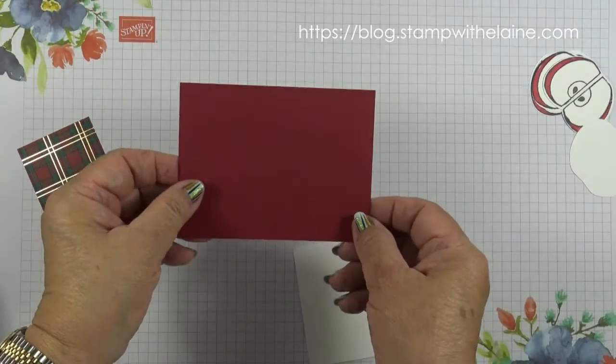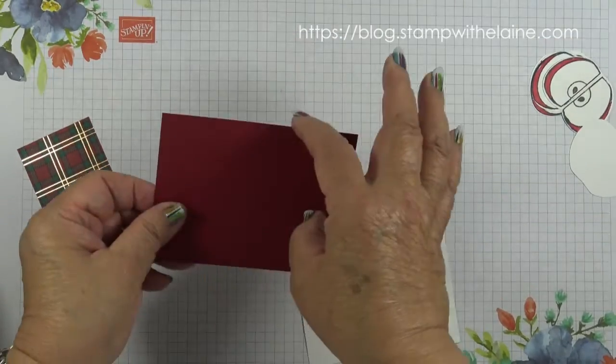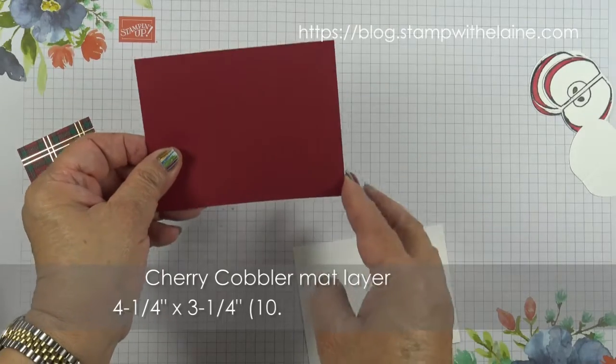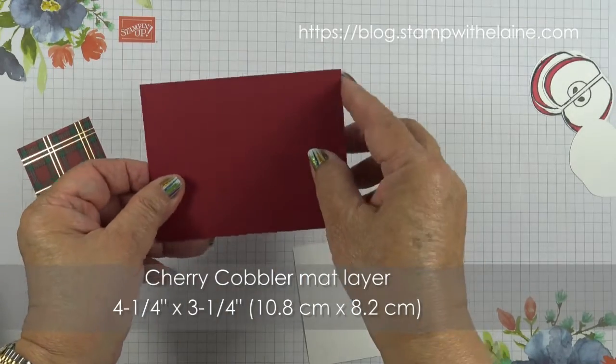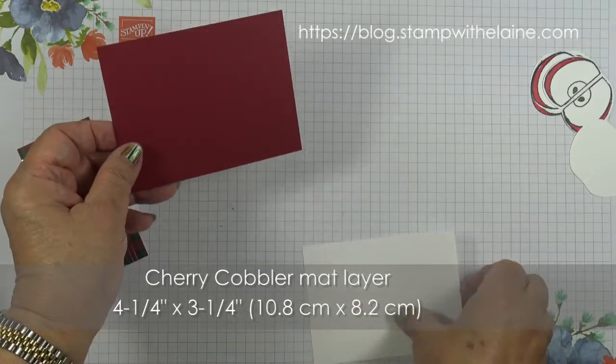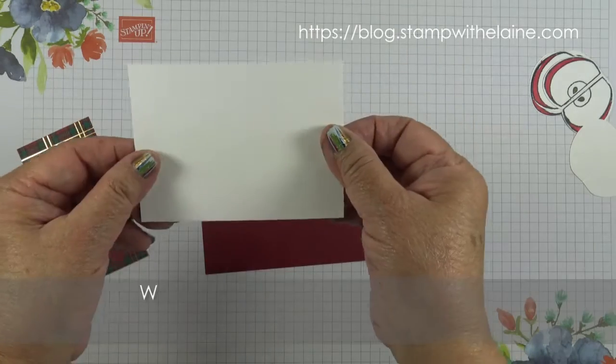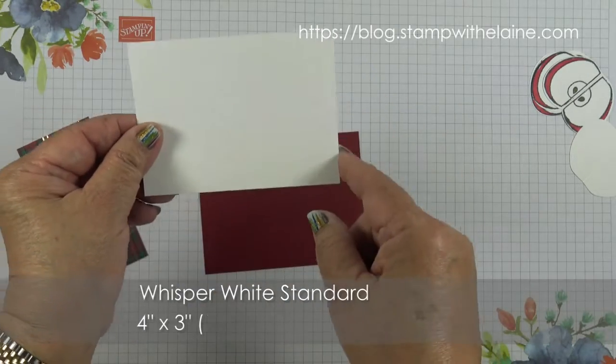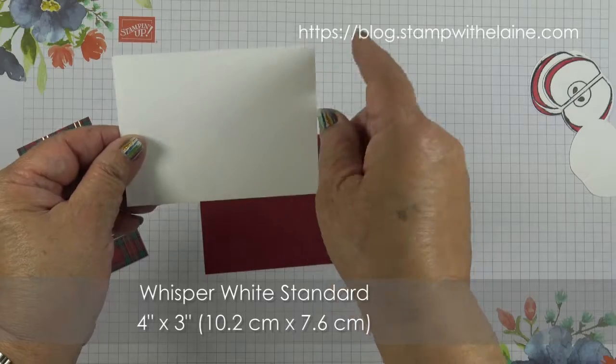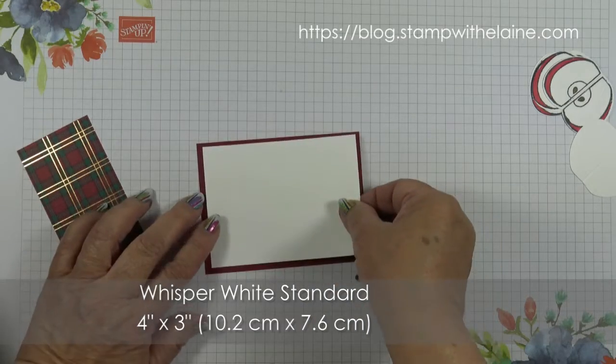I have a cherry cobbler layer and that measures four and a quarter inches by three and a quarter inches that's ten point eight centimeters by eight point two centimeters and a whisper white piece which is four inches by three inches that's ten point two by seven point six to go on top.